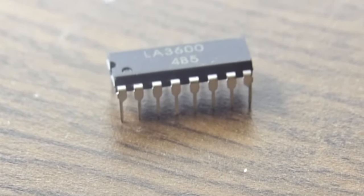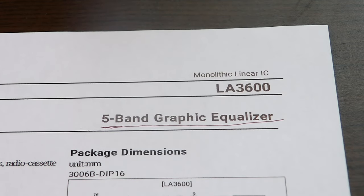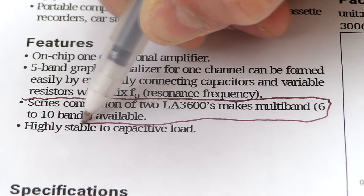The circuit is based on the LA3600, which according to the datasheet is a 5-band graphic equalizer that can be extended up to 10 bands.